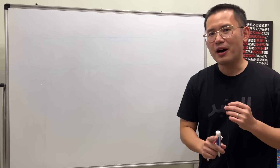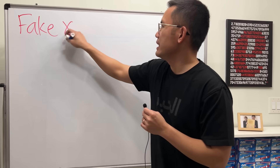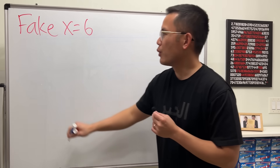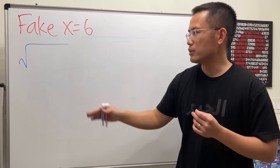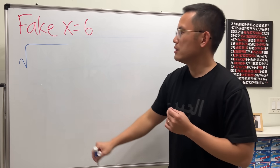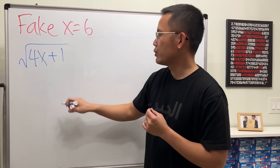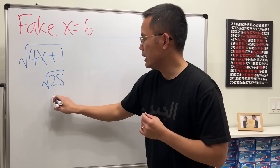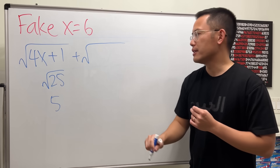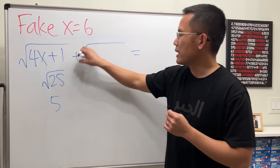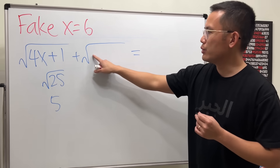Now I want to show you how I construct an equation like this. To start, you want a fake answer in mind. Let's say we want x equals 6 as our fake answer. Open some square roots and make sure the input is a perfect square so numbers are easier to work with. Let's use 4x — that gives 24 — and add 1, so we get square root of 25, which is 5.